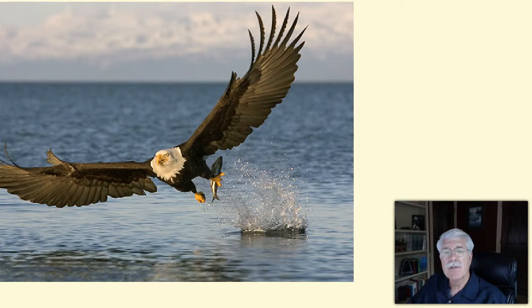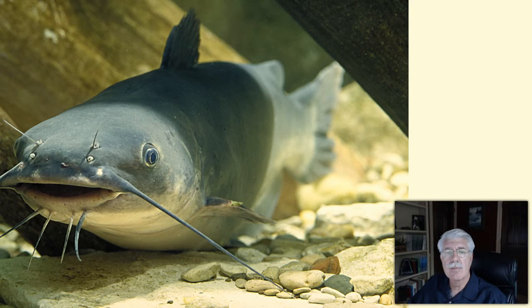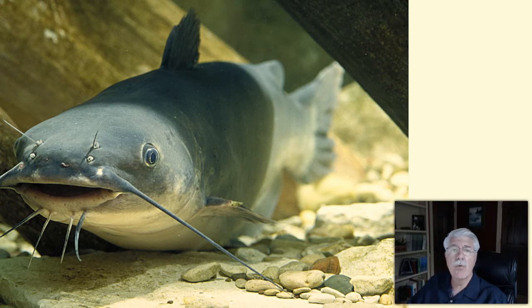Some fish, such as catfish, feed near the bottom. Feeding at different levels in the water column helps one fish species reduce competition with other species. Feeding specialization helps the species to fit into a particular niche.